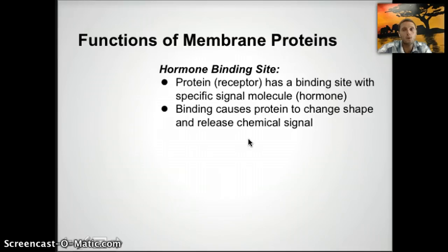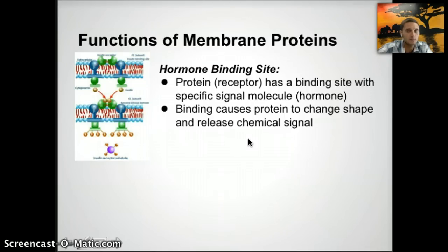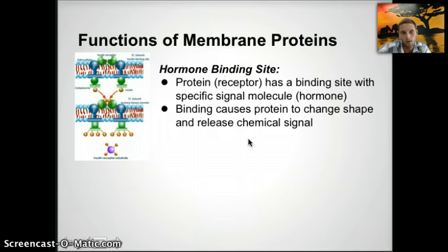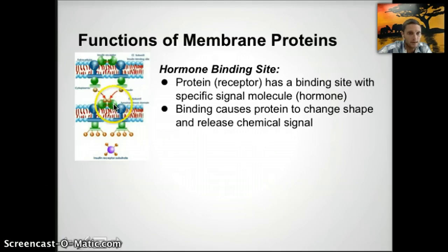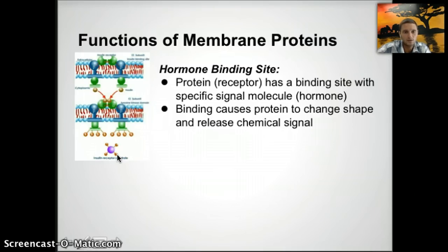Membrane proteins have several different functions. One is to serve as a hormone binding site, where the protein acts as a receptor with a specific binding site for a single molecule hormone. When the hormone attaches to the protein, it causes the protein to change shape, releasing a chemical signal inside or outside of the cell. This is one way cells communicate — if that signal attaches to binding sites on other cells, it causes those cells to carry out an action.